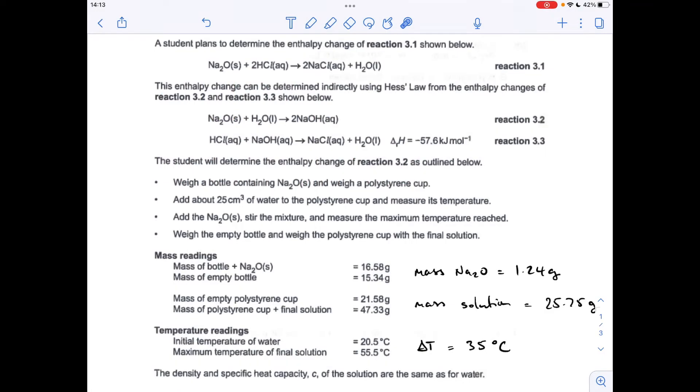Okay, so make a start. You can see I've already added a little bit of extra information here. Effectively, we've got to calculate the enthalpy change for reaction 3.2 and then we're going to use that and the given delta H value for reaction 3.3 to calculate the enthalpy change for reaction 3.1, which we're told can't be determined directly.